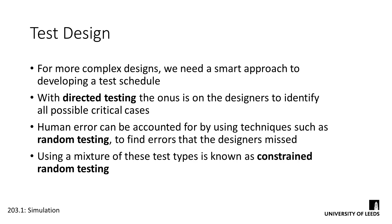To account for this, we can use techniques such as random testing, in which we'd throw randomized inputs at a design for as long as our timescale will allow, and examine the outputs for any issues. This scattergun approach is good for highlighting previously unknown interesting or critical cases in complex systems, but also results in a lot of uninteresting cases, which could be seen as time wasted.